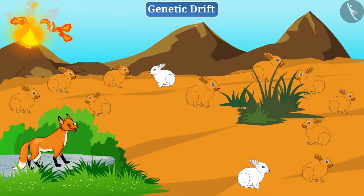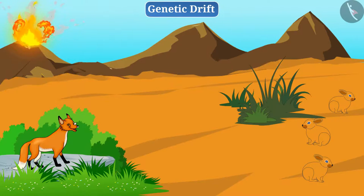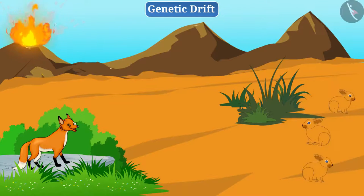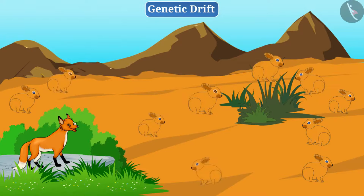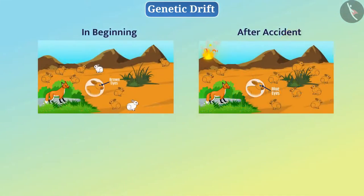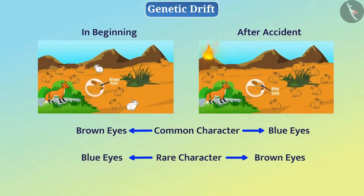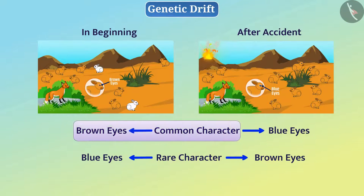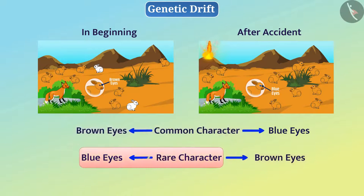One day, a lot of rabbits are killed due to a volcanic eruption on the hill. But incidentally, some blue-eyed rabbits survived. Now their population grows, and now the majority of rabbits have blue eyes. In this way, due to a sudden accident in the rabbit population, the character of brown eyes, which was common earlier, became rare, and the character of blue eyes, which was rare, are now normal.